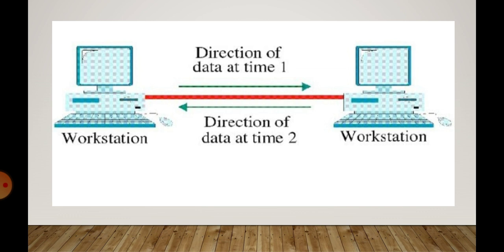Next is your half duplex. Half duplex dhe vich ki hundha hai ga? Data can be sent in both the directions — douno directions dhe vich data send kar saka dhe hai. But only in one direction at a time. Aapan ikko hi direction dhe vich data transfer kar saka dhe hai. Data transmit vhi hundha hai, receive vhi hundha hai, udha response vhi dhujjanu phej janda hai ga, but not simultaneously — not at the same time.